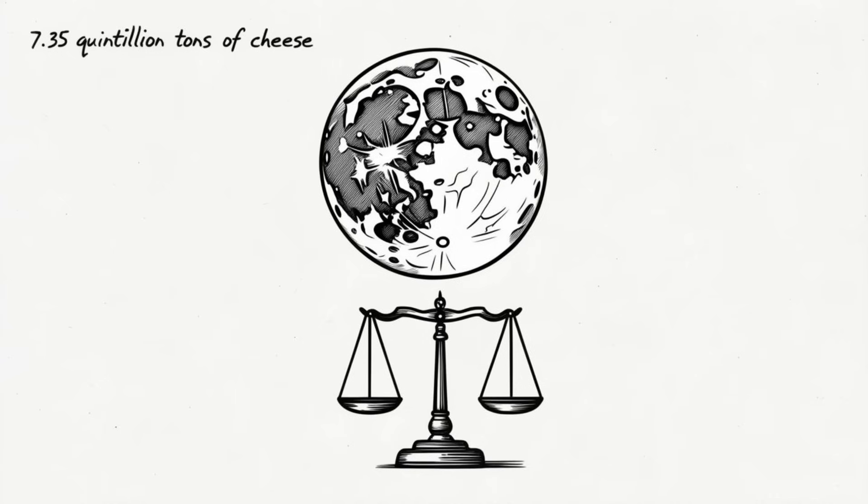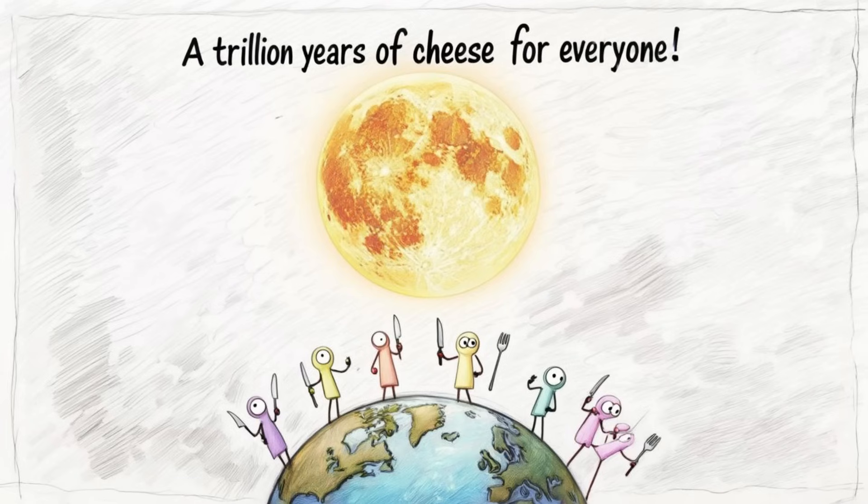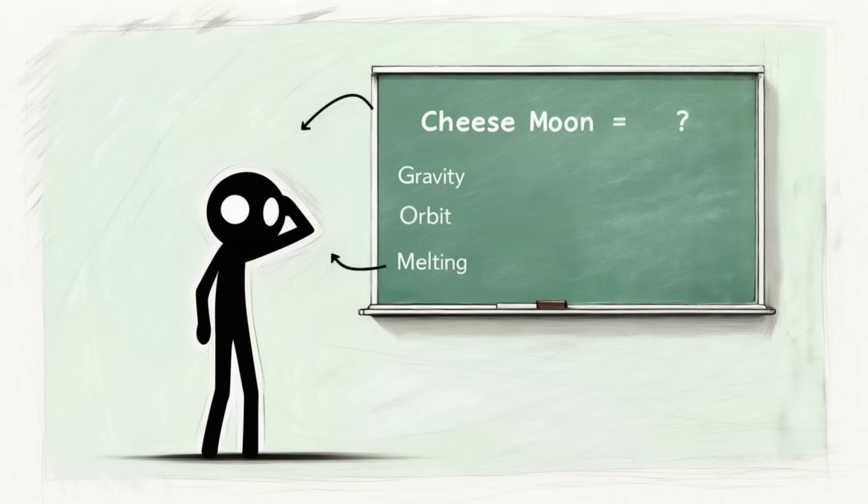Now, let's talk numbers. The moon is about 3,474 kilometers wide. Its mass is roughly 7.35 times 10 to the 22nd kilograms. That's a lot of cheese. To put it into perspective, if the moon were cheddar, it could feed every person on Earth, generously, for about a trillion years. Assuming, of course, we found a way to keep it from going bad. But food supply is the least weird part of this scenario.